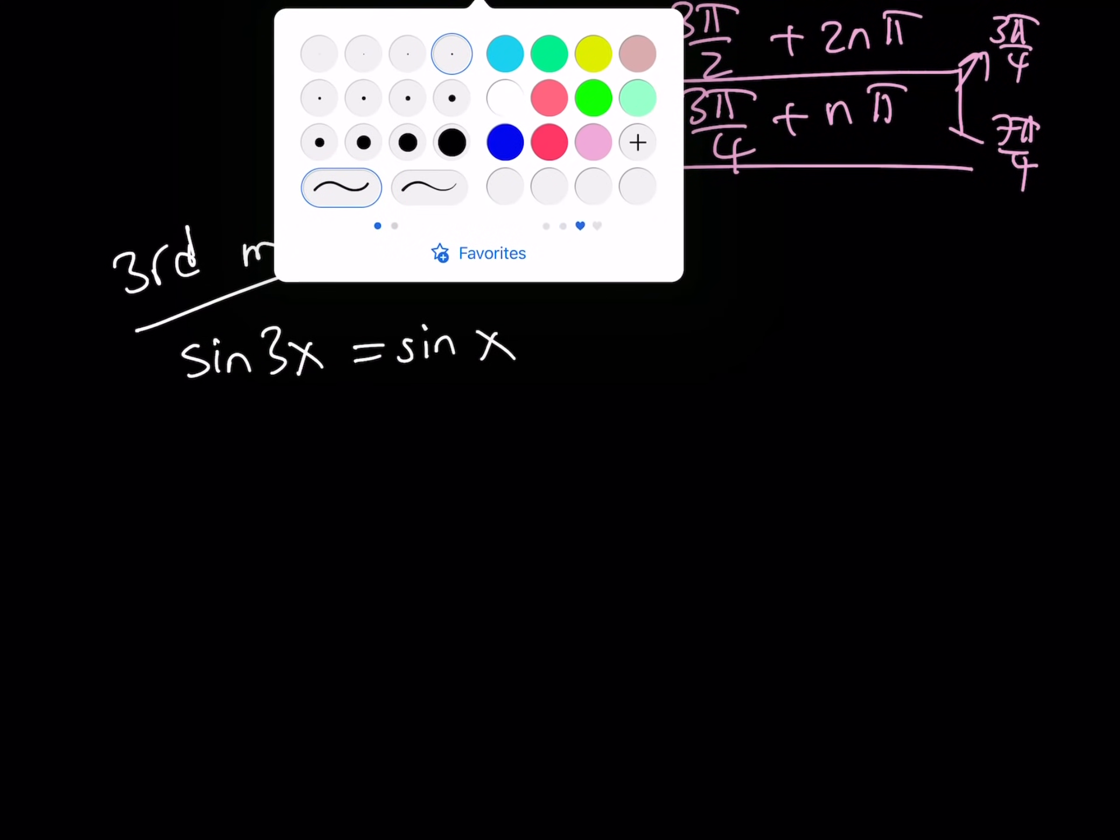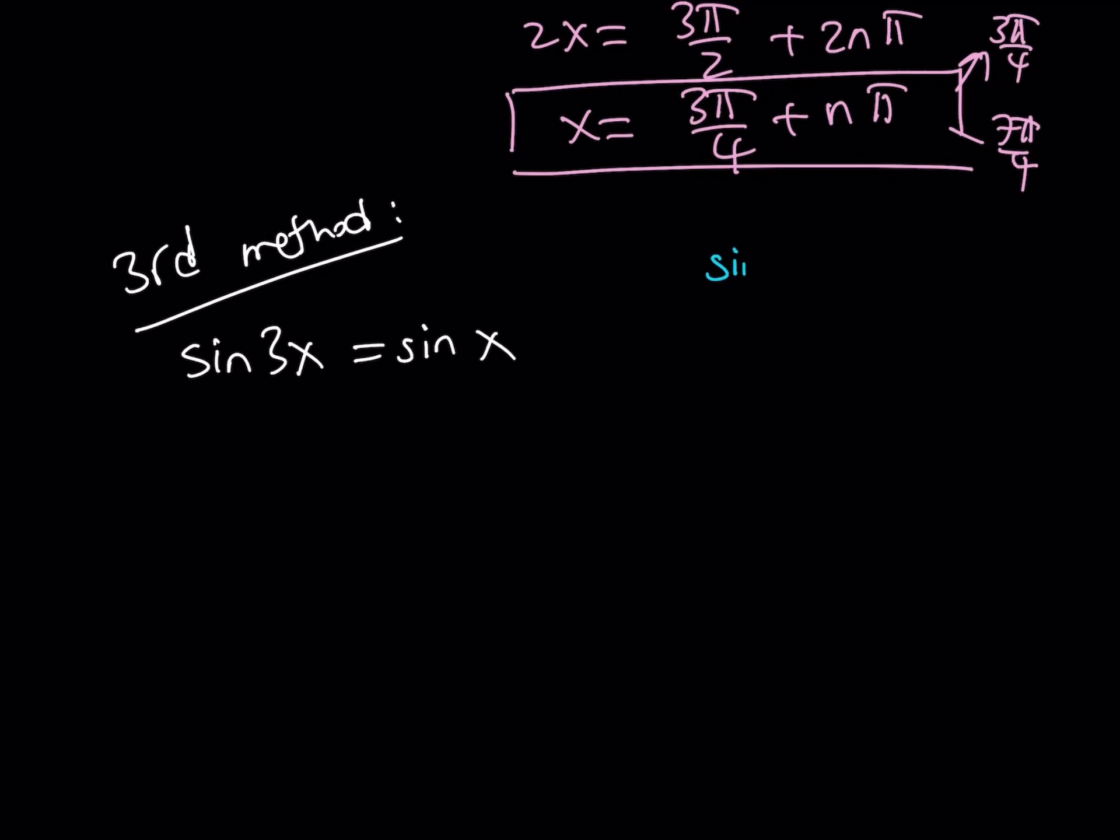If you have a trigonometric equation with sine, like sine alpha equals sine beta, this means two things. Either alpha can be written as beta plus 2n pi, or alpha can be written as pi minus beta plus 2n pi. Because, there are two angles whose signs are equal,